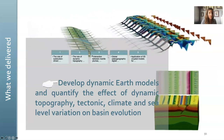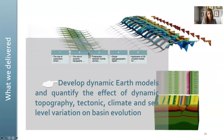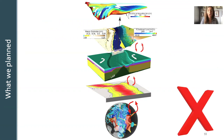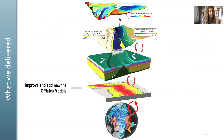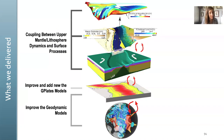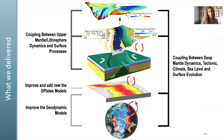Here is what we planned to do, and what we have actually done. We improved and added the new G-Plates model. We improved the geodynamic model linking the reconstruction of the Earth's surface and the mantle dynamics. We also developed coupling which includes the upper mantle, lithosphere dynamics, and surface processes; and another coupling which includes deep mantle dynamics, tectonics, sea level, climate, and surface evolution. So we delivered a lot of different models, and also two different coupled models.